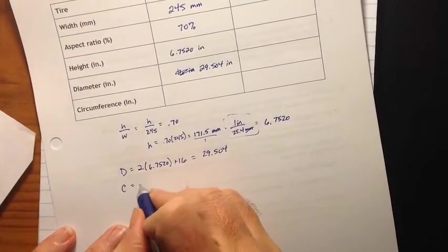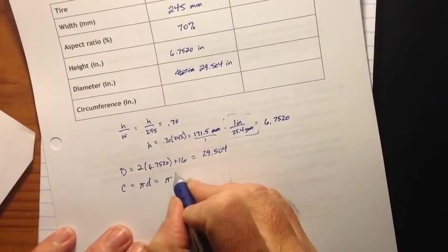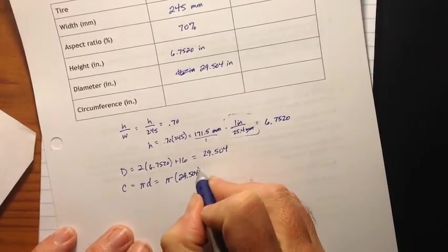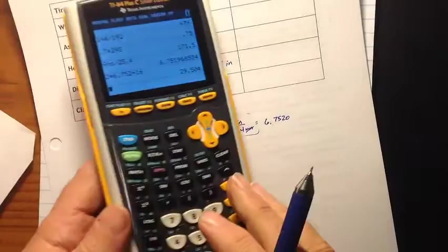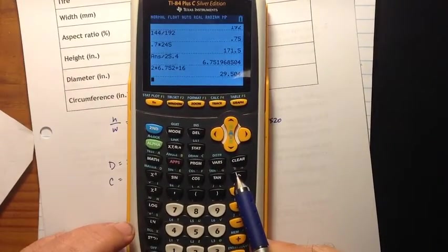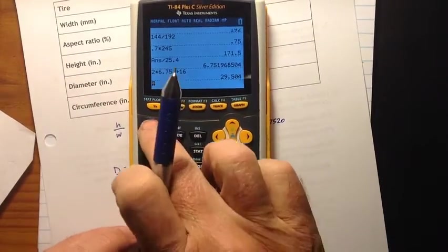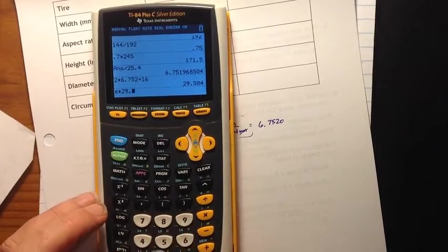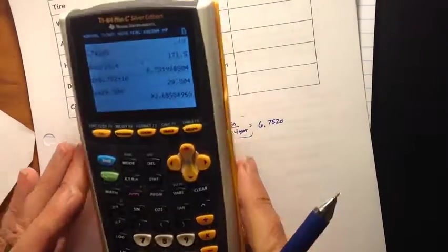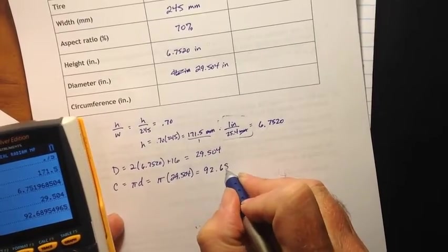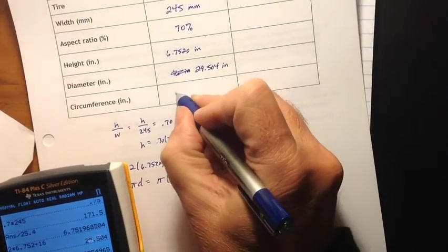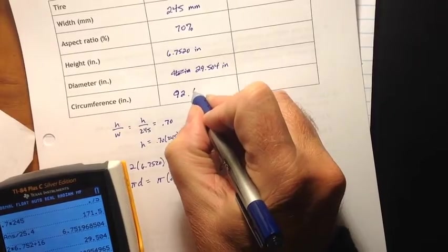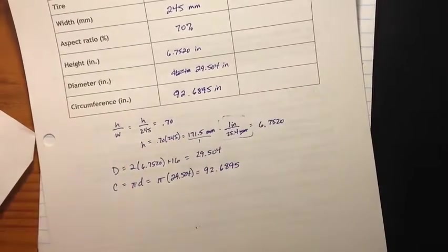And then circumference. Circumference equals pi times the diameter. So pi times 29.504. There is a pi button on your calculator. It is, if you're using the 84 calculator, pi is right here above the carat symbol. So we hit second and then the carat. And that puts a little pi on the screen times 29.504. And that gives us 92.6895 inches. And that is the circumference of the first tire. Circumference meaning the distance around.